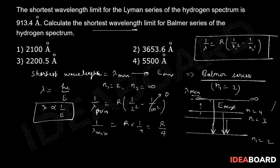So this will be simply 1 upon 4 and this will be R by 4. This is going to be 1 upon lambda min. From there, lambda min is equal to 4 by R itself. Now we know that Rydberg constant R is 1.1 into 10 to the power 7 meter inverse. We know that this is the relation, so 4 divided by R, which is 1.1 into 10 to the power 7, this will be in meters.